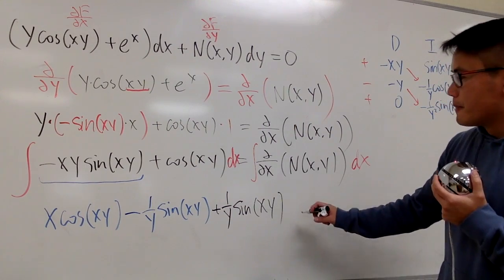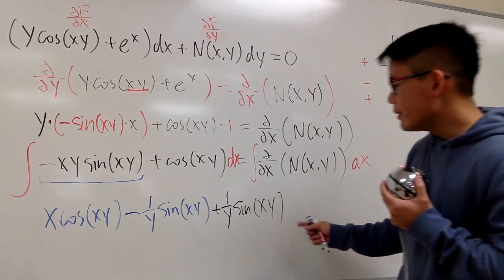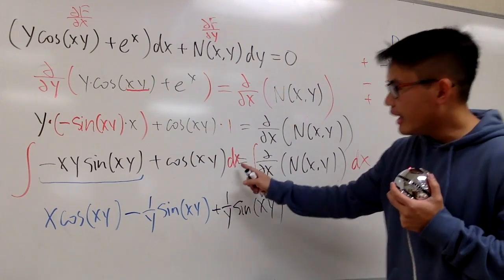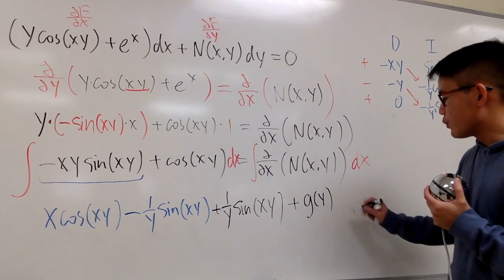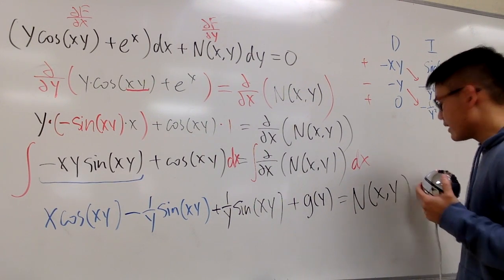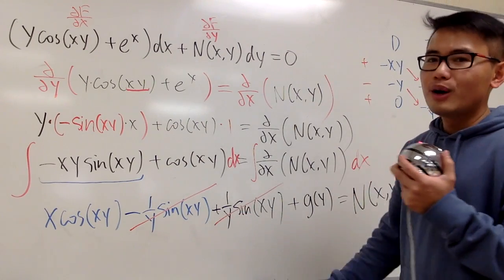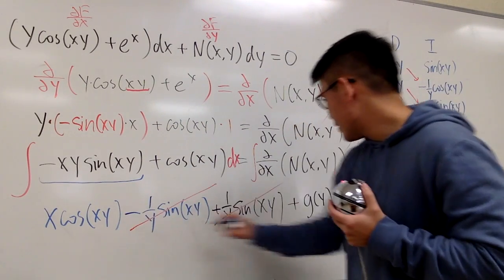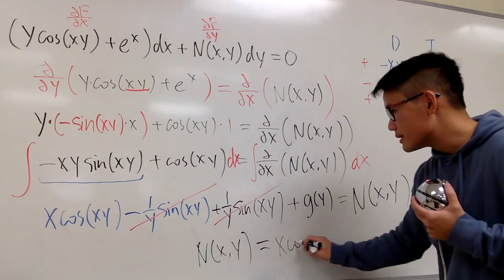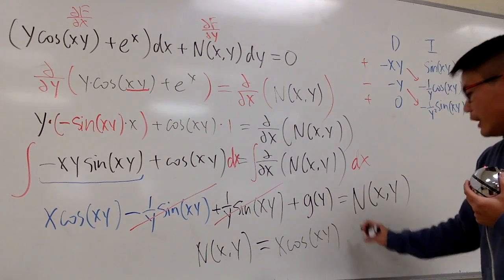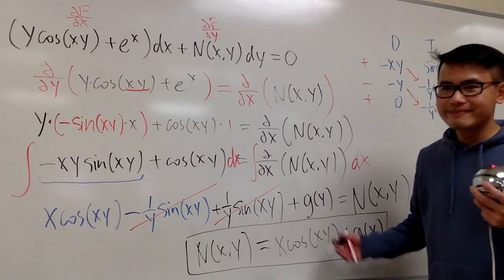This is pretty much it for the integration part. But we have to add a constant — not just plus C, because in the x world y is the constant, so we add a function in terms of y. Therefore N(x, y) is equal to x times cosine of xy, plus a function of y. And that right there is it.